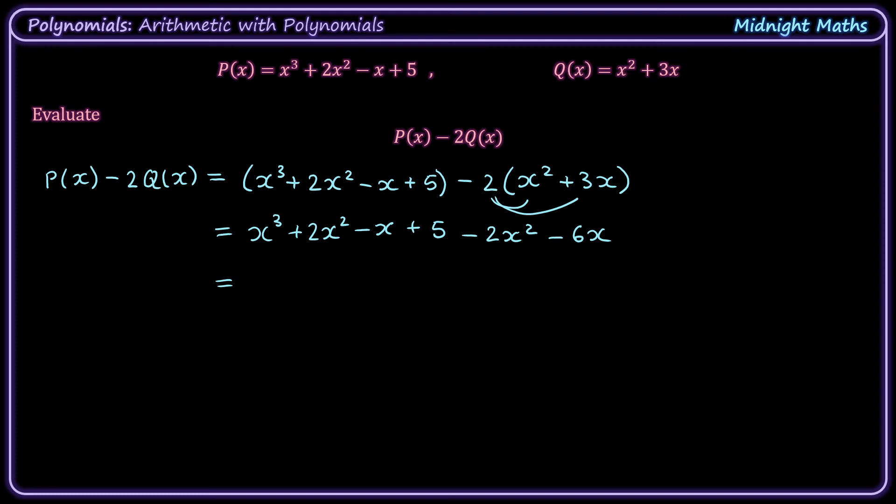Good, and now what we have to do is group our like terms again. We have x cubed, we have plus 2x squared, minus 2x squared, so actually no more x squared terms. We have minus x minus 6x, so that's minus 7x, and then the plus 5.